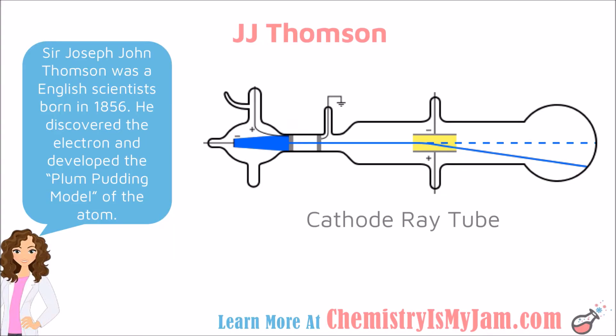In the mid-1800s, another English scientist named Sir Joseph John Thompson was born — often referred to as J.J. Thompson — and he is credited for discovering the electron. He used something called a cathode ray tube, which has a positive charge at one end and a negative charge at the other. Thompson observed a lighted stream of particles — electrons — moving through the tube. He noticed that a positive charge caused the stream to move towards it, and a negative charge caused it to move away. Thompson thus discovered the electron and realized from this deflection that it had a negative charge.